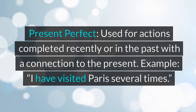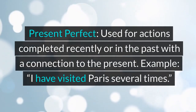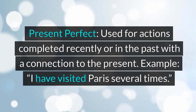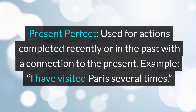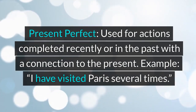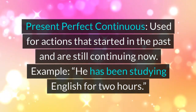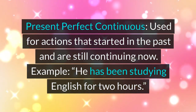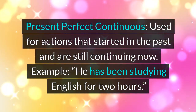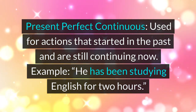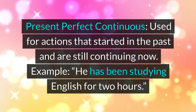Present perfect: used for actions completed recently or in the past with a connection to the present. Example: I have visited Paris several times. Present perfect continuous: used for actions that started in the past and are still continuing now. Example: he has been studying English for two hours.